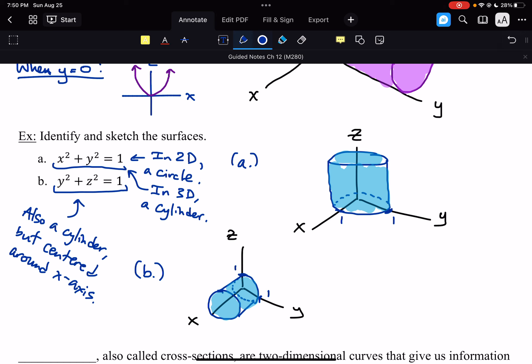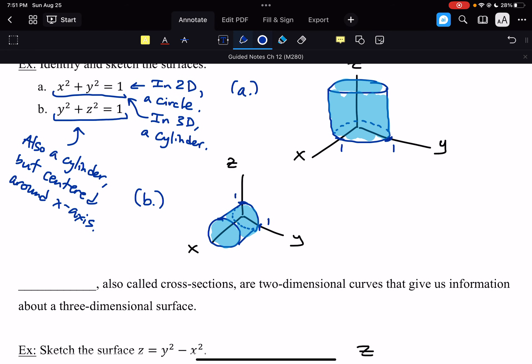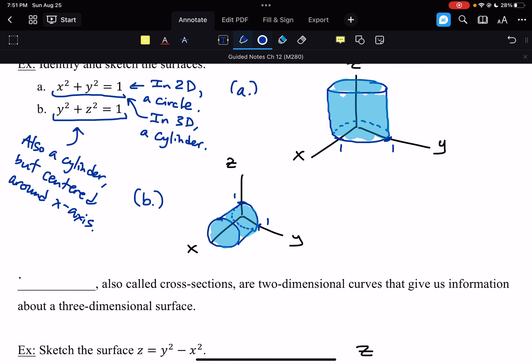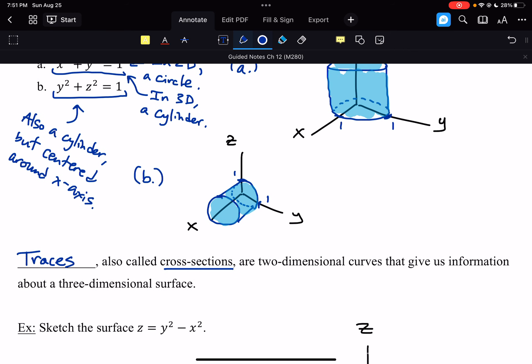Now, what if we're trying to sketch something that we don't already have an intuitive understanding for, or it uses all three variables instead of just two of them? We have to come up with better ways of sketching those types of surfaces. And to do that, we're going to use what we call traces. So traces, also called cross sections, are two-dimensional curves that give us information about a three-dimensional surface.